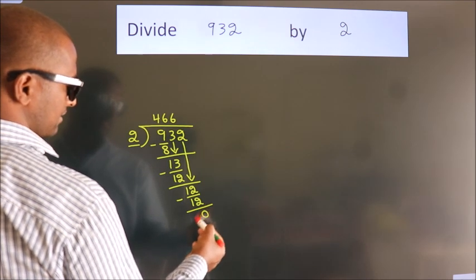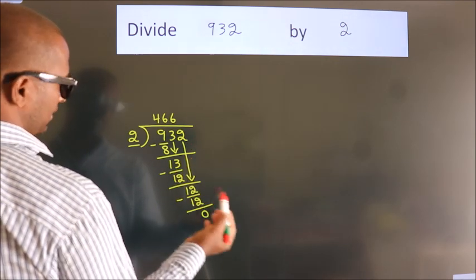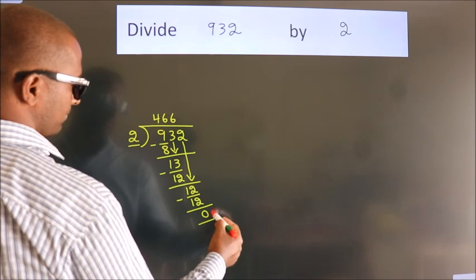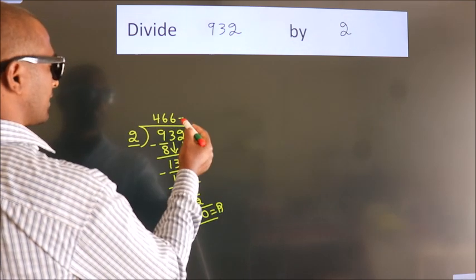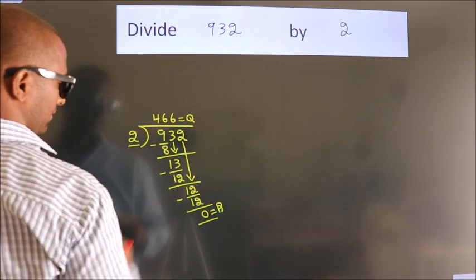After this, no more numbers to bring it down. So we stop here. This is our remainder. This is our quotient.